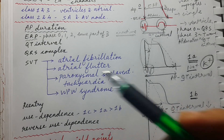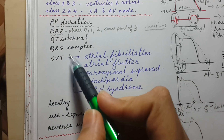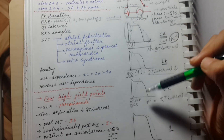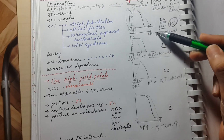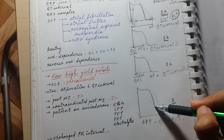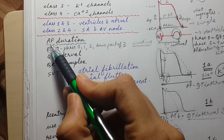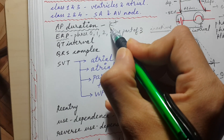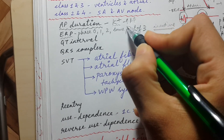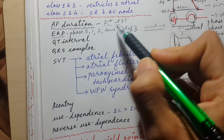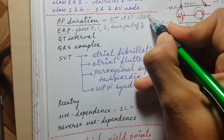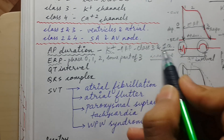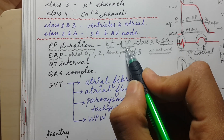Any drug that affects potassium channels will increase the action potential duration and QT interval. Class 3 drugs obviously work on potassium channels, and class 1A also works on potassium channels to some extent — that's why both increase APD and prolong the QT interval. Class 1A mainly acts on sodium channels but also has potassium channel blocking activity.